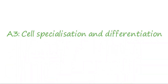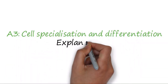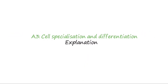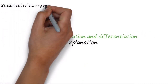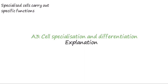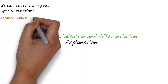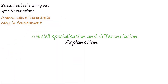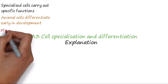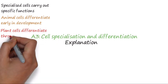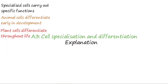In previous videos we looked at generalised animal and plant cells, but in multicellular organisms many cells will become specialised to carry out specific functions. In animals, most types of cells become specialised or differentiate early on in the organism's development. However, many types of plant cells are able to differentiate throughout the plant's life. In this video we will look at some examples of specialised cells and how they are adapted to carry out their functions.